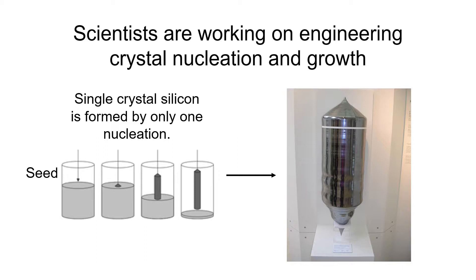Scientists are working on engineering crystals in a better way. Let's go back to silicon. Electronics requires a very pure and perfect single crystal of silicon, which means the whole huge crystal should only grow from one nucleation. To achieve this, scientists have worked for years to better control it, and the process is slow and expensive.